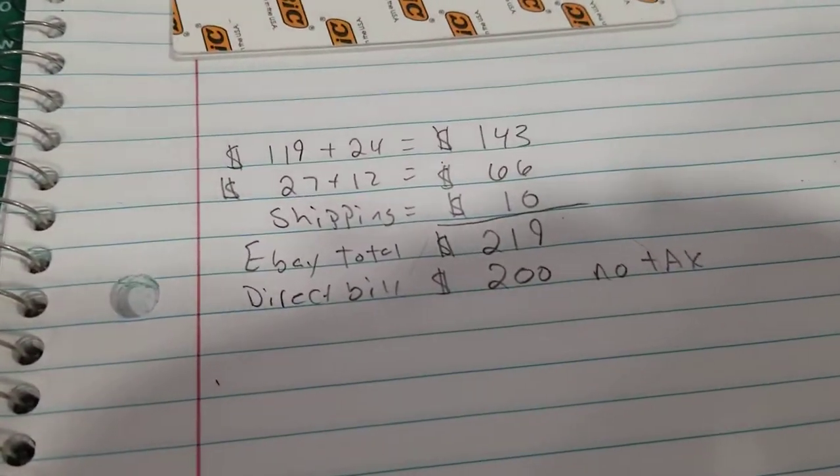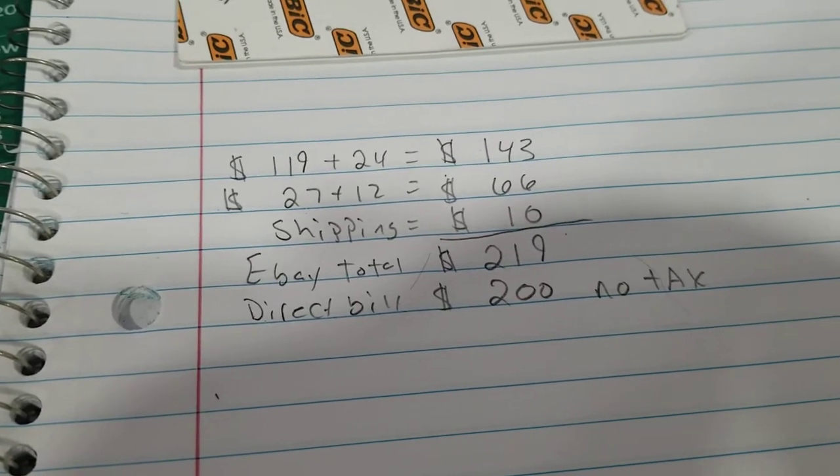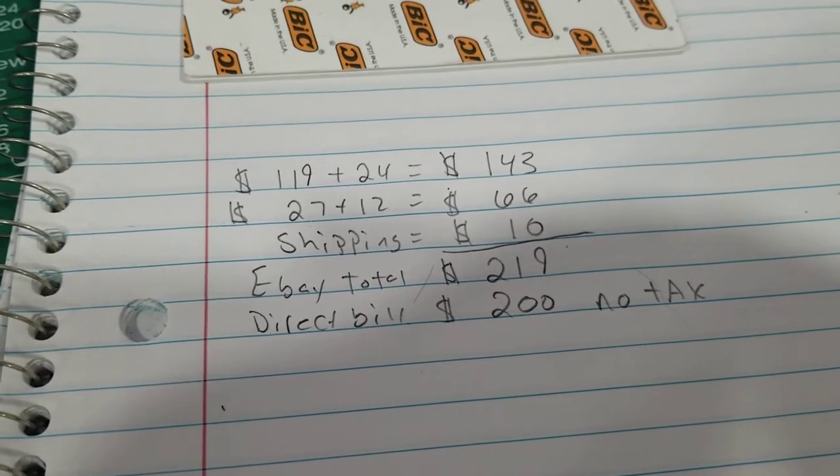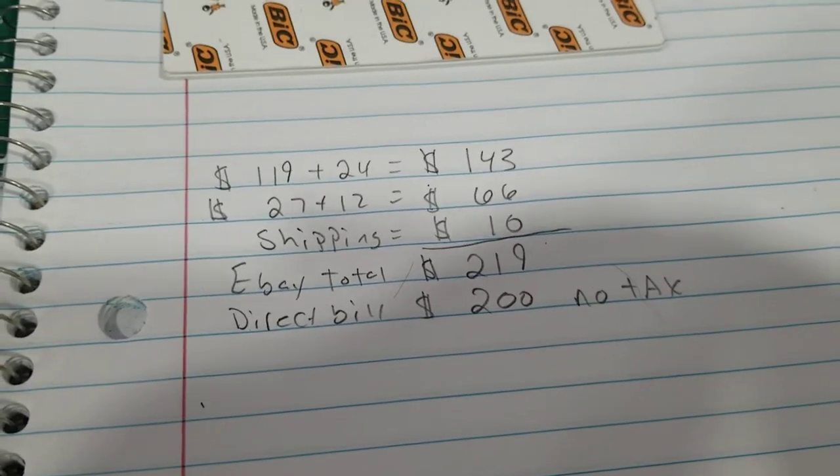The cost for them, here's a breakdown. The L-shaped ones are going to be $143 for the four. The two are $66 and that includes the upgrade to a quarter inch. And shipping is going to be $10.